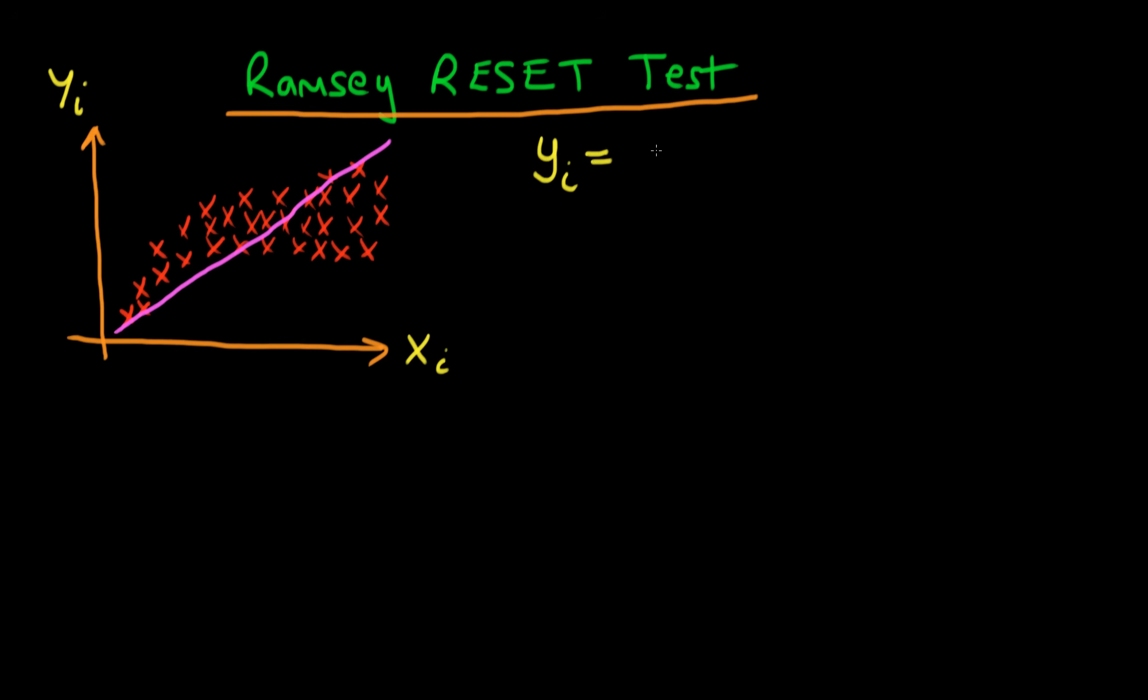So this is a model which is yi equals alpha plus beta xi plus some error ei. So perhaps what you might think to do here might be to include a quadratic term of xi, because then perhaps my fitted line might look something like that. Or not perfect, but it's doing a better job of explaining the variation in yi than my original model.